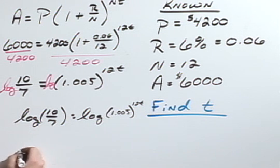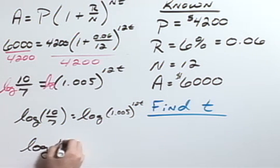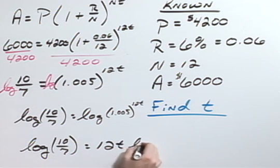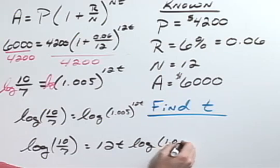so that I have the log of 10 sevenths equals 12t times the log of 1.005.